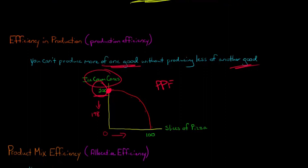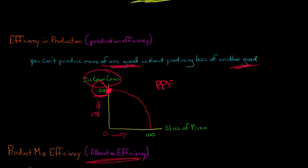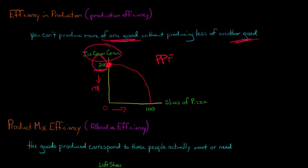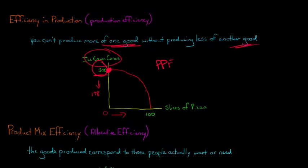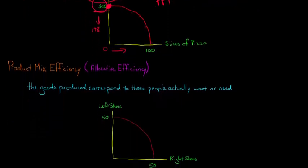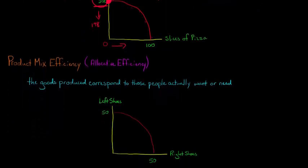Product mix efficiency, which is also called allocative efficiency, has to do with people's preferences in the economy. Basically, the goods that are going to be produced are going to go to the people who actually want or need them — but it's different from efficiency in consumption. It sounds similar, but let me give you an example of how it's different.